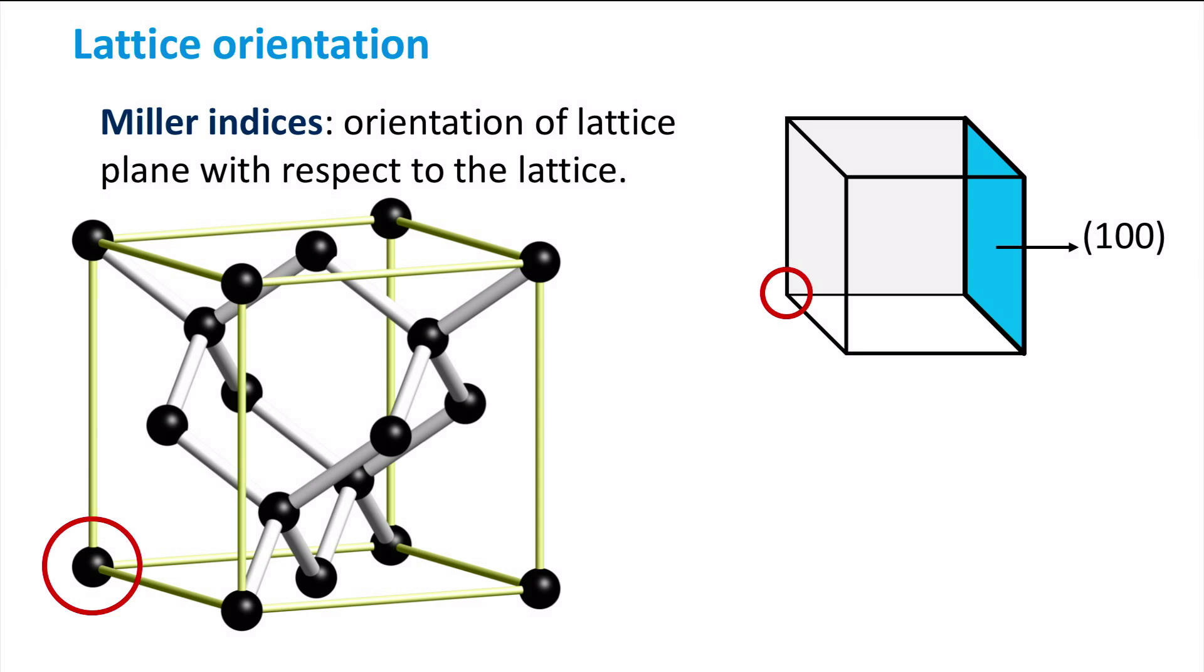We now return to the unit cell. In this unit cell many different lattice orientations can be found, which are indicated as the orientation of a lattice plane with respect to the lattice. Using the so-called Miller indices, a vector representation describing the orientation of these lattice planes can be given.